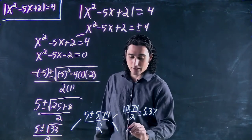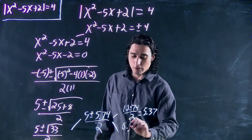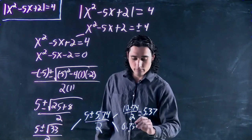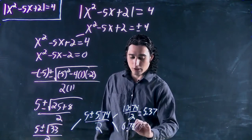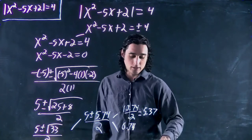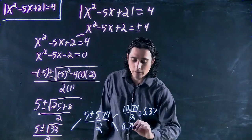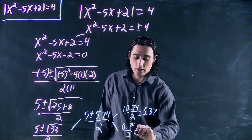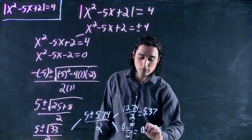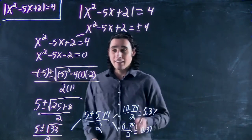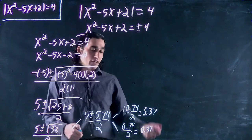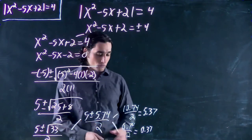Or we get minus. So we get 0.74 divided by 2, which is equal to 0.37. So this part itself had two solutions.